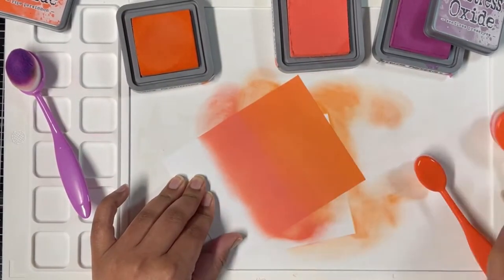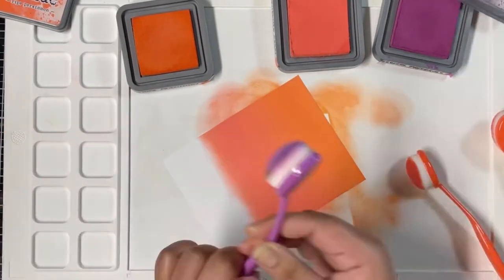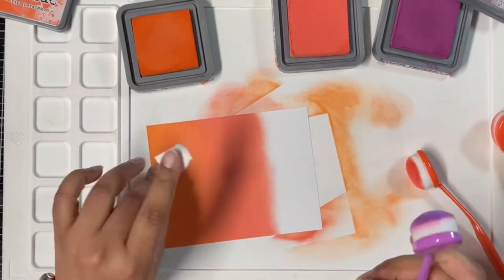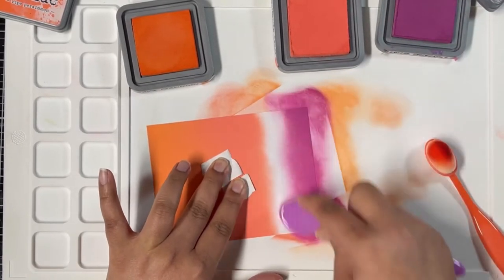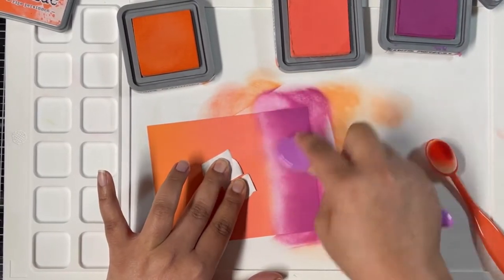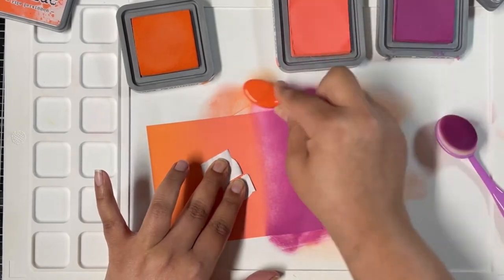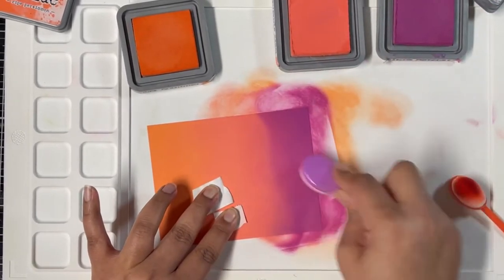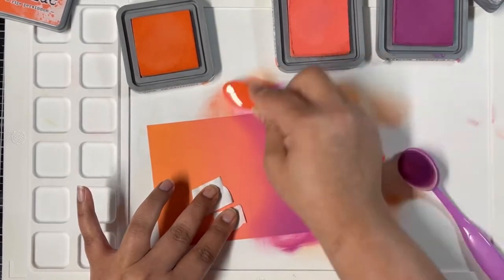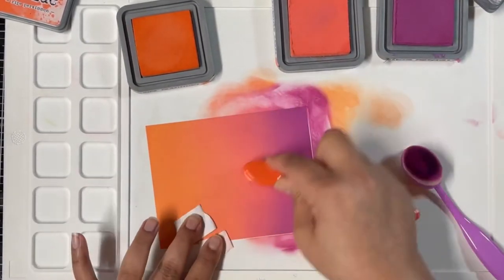I started by inking one side of my A2 size panel using Ripe Persimmon, then blended that color using Abandoned Coral, going back and forth between the two colors to get a good blend. Now I'm blending Seedless Preserve into the Abandoned Coral, again going back and forth to get a good blend. Once I'm happy with the blending, I'll move on to the next one.